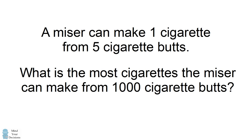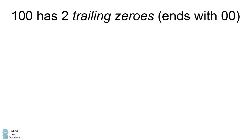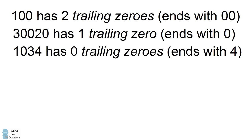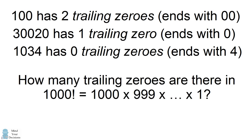While you're working on this problem, I'm going to pose another problem. The number 100 has two trailing zeros — the number ends in two zeros. The number 30,020 has one trailing zero because it ends in one zero. The number 1034 has no trailing zeros; it does not end in a zero. How many trailing zeros are there in the number 1,000 factorial? Give these problems a try and when you're ready, keep watching the video for the solutions.